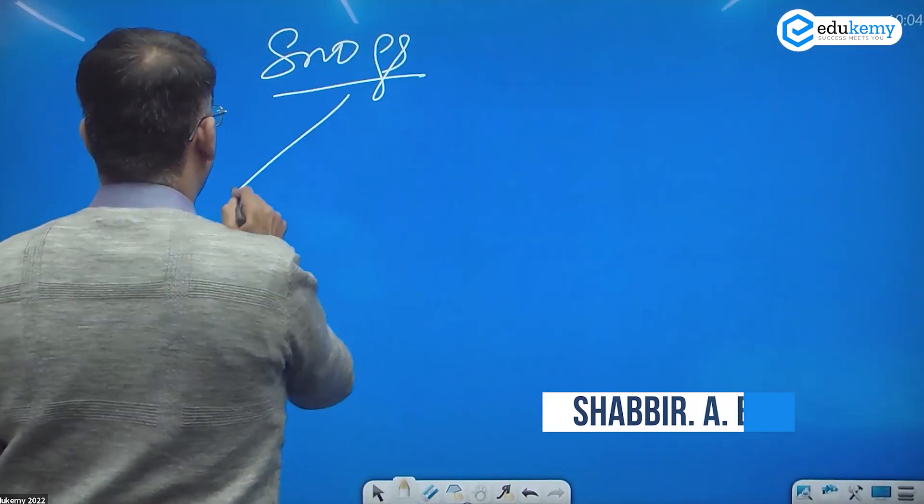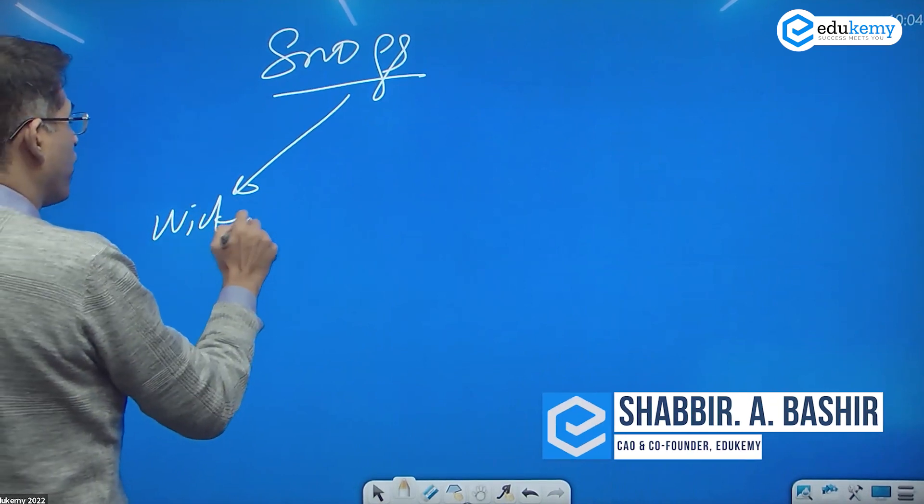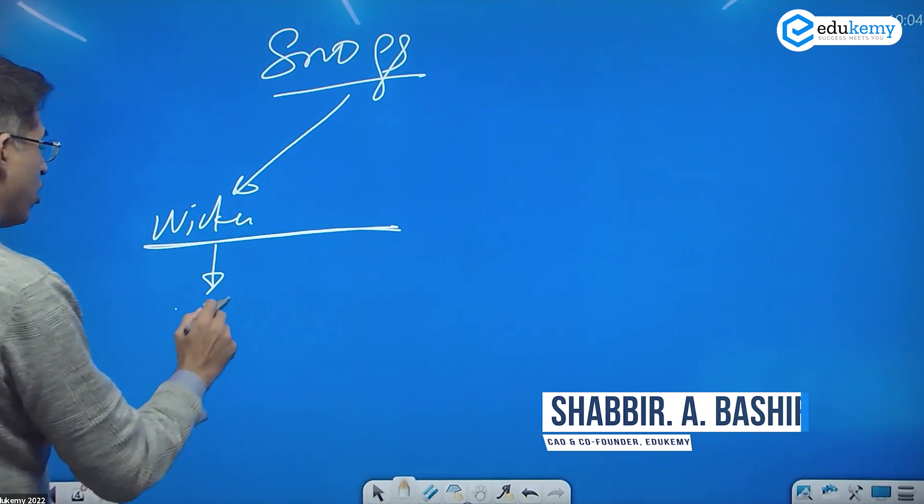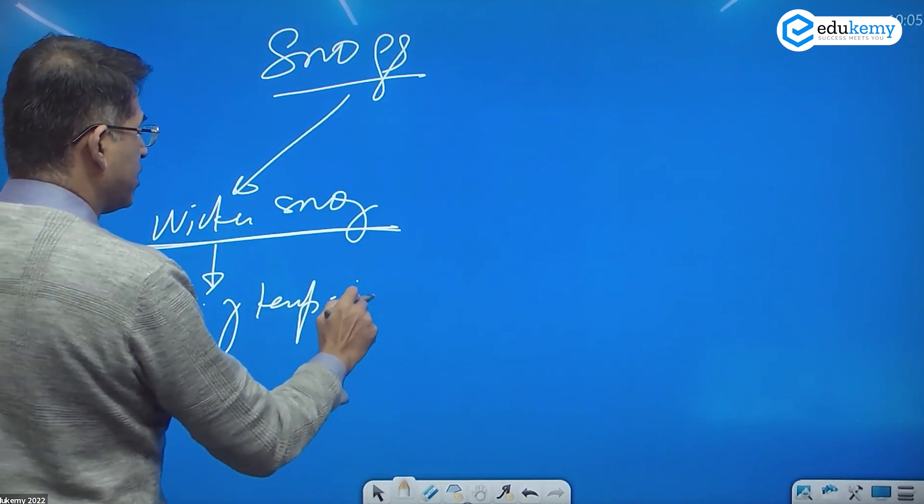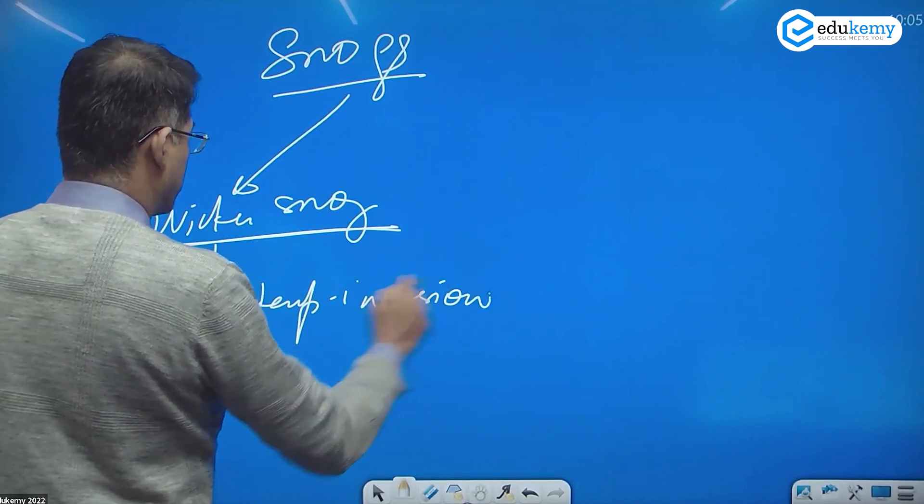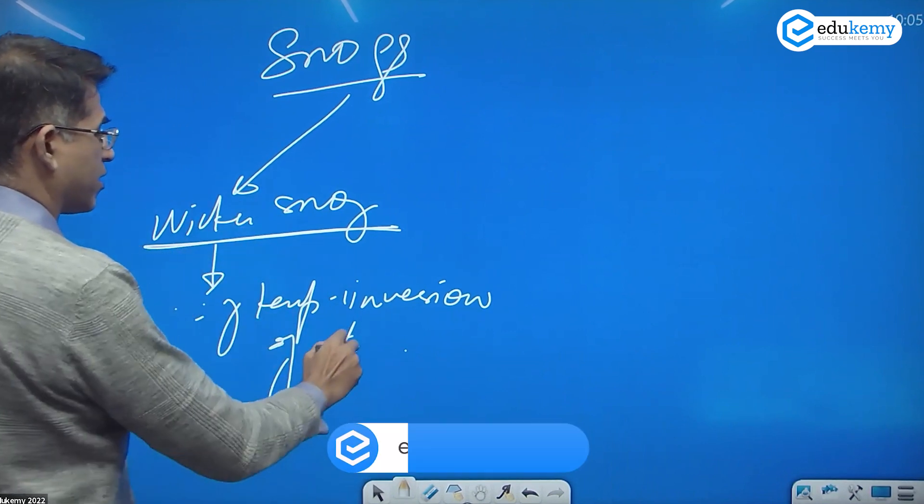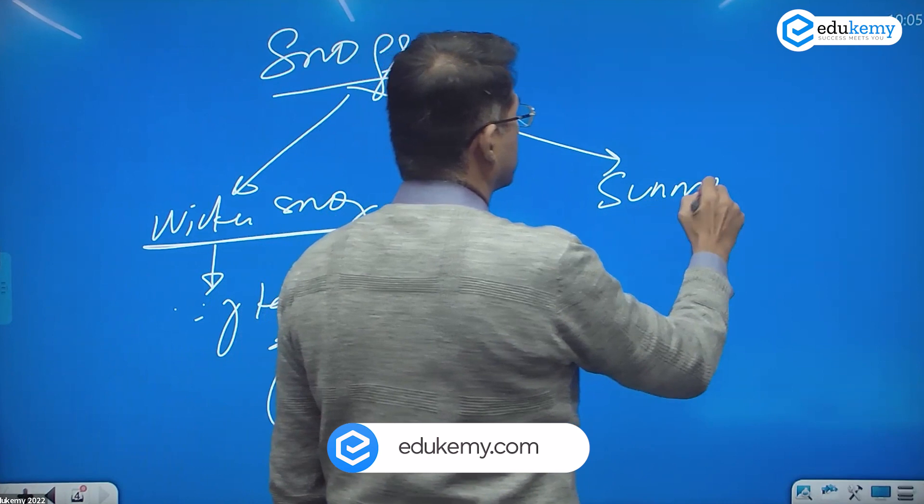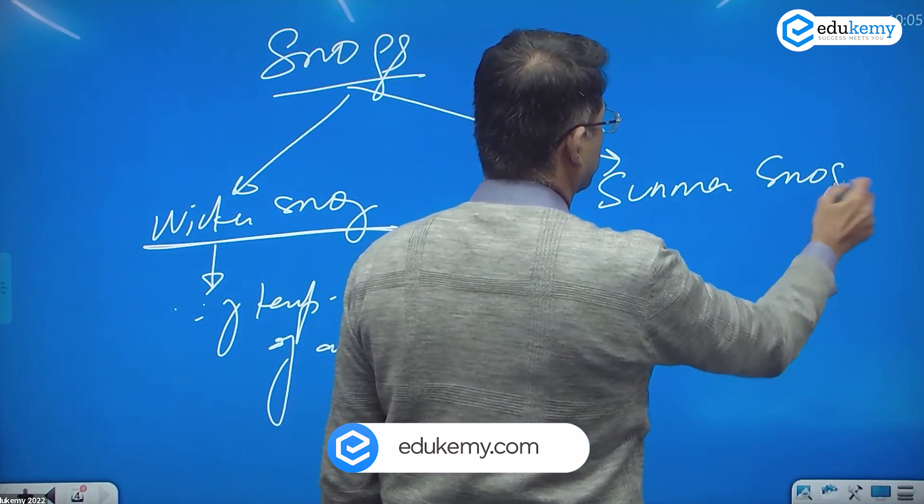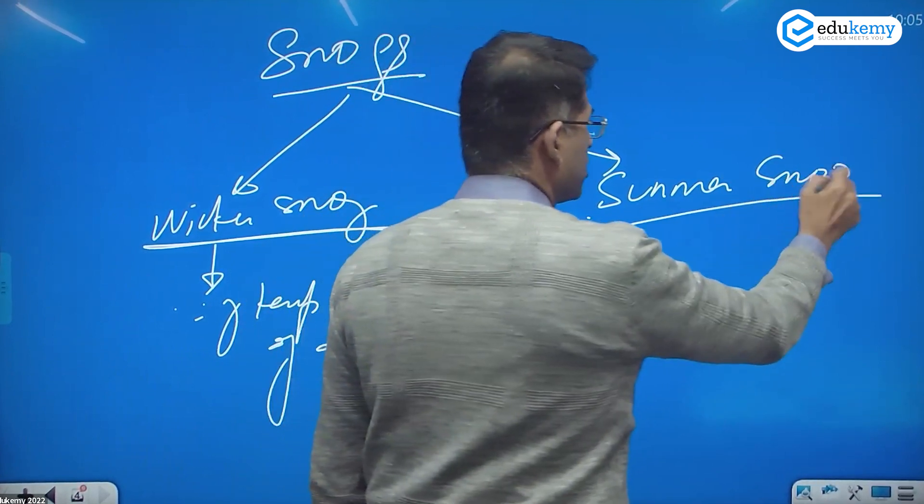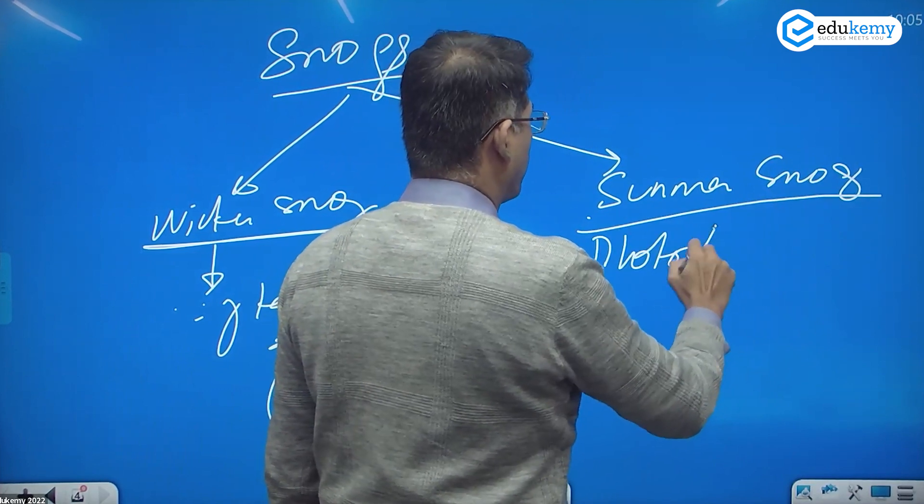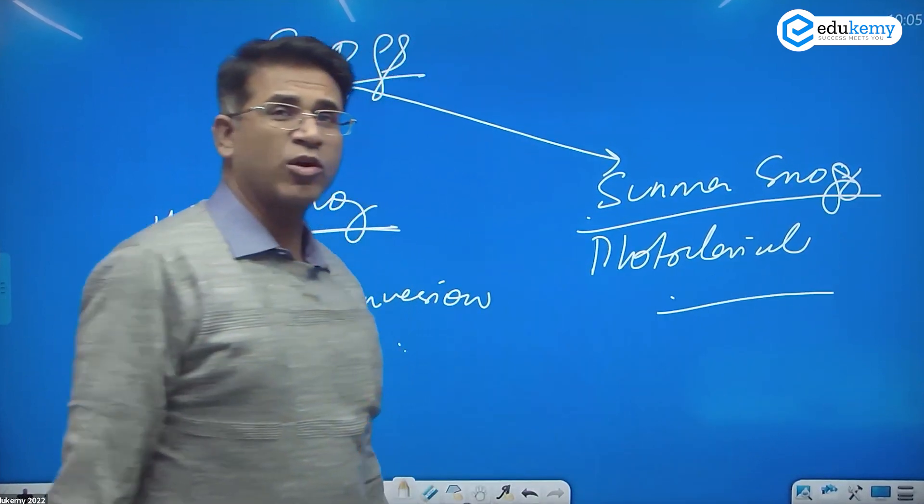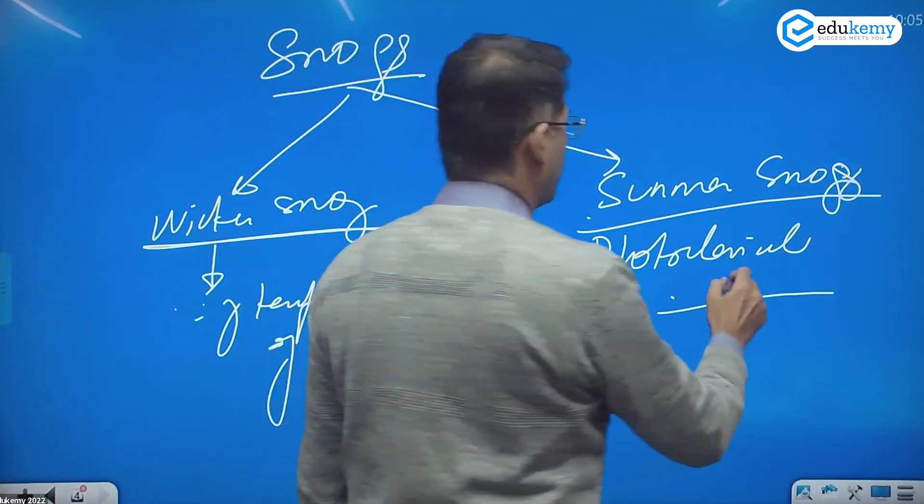The first type of smog is winter smog, which is because of temperature inversion of the atmosphere. The second smog is summer smog. Summer smog is also called photochemical smog.